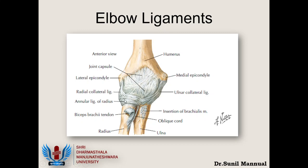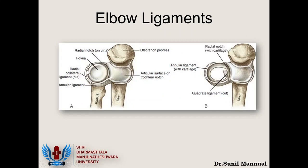The annular ligament goes all around the radius. It is made up of fibrous tissue on the outside and cartilage on the inside, almost articulating with the proximal radius. This annular ligament is the tie that keeps the proximal radius in place. During pronation and supination the radius turns almost 180 degrees, and there is a chance for the radius to slip off anteriorly or posteriorly. It is the annular ligament that holds the proximal radius in place.